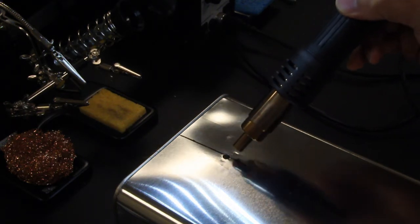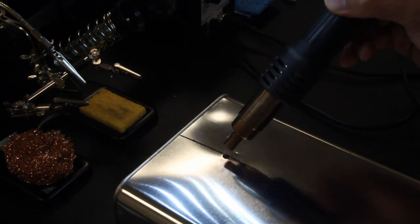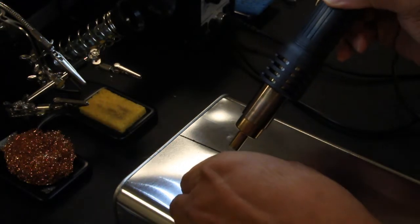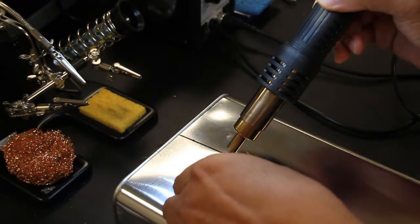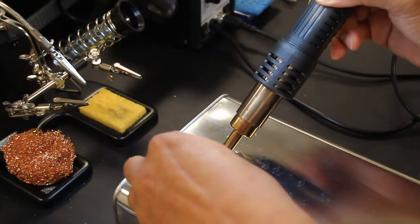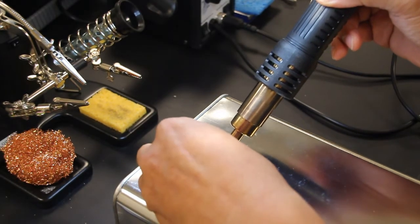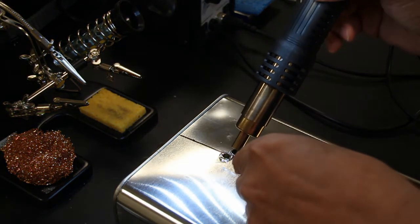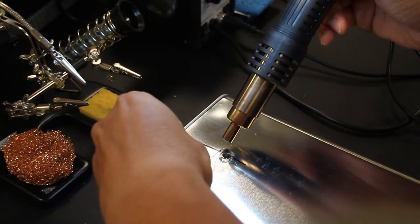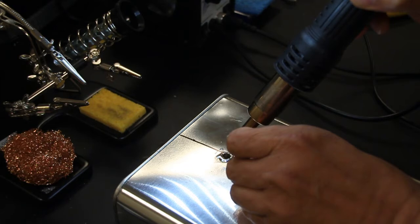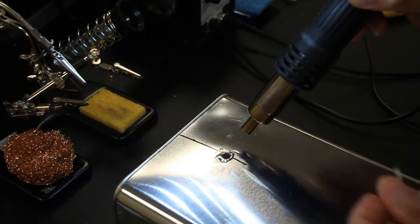You're going to heat this up and when it gets hot enough you should be able to start melting solder around the hole. You can see it works very nicely. It should get a ring all the way around.